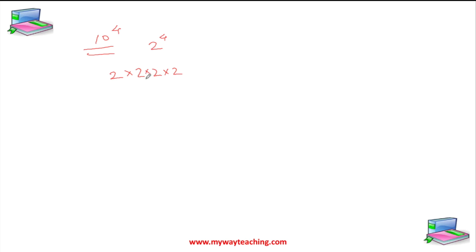So 2 into 2 is 4, 4 into 2 is 8, 8 into 2 is 16. So you can write 16 in this form. Or you can make the factors like this way, up to 1. So this means 2 raised to power 4.